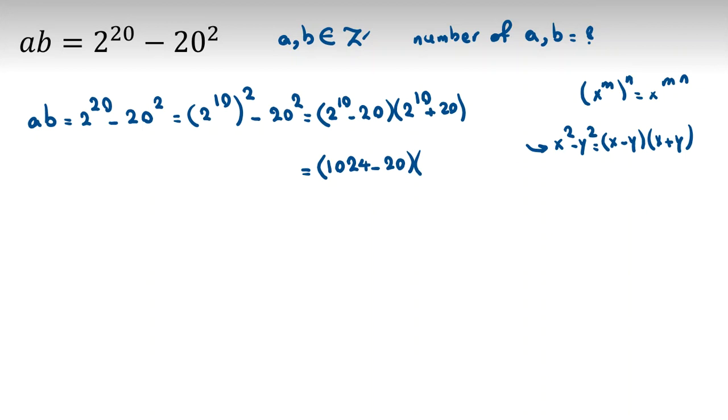Now, 2 to the 10 is 1024 minus 20, 1024 plus 20, equal to 1004 times 1044.